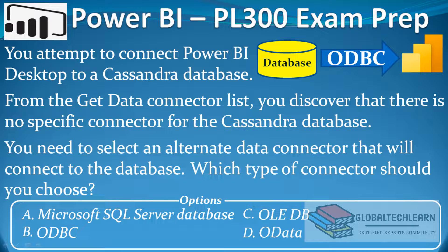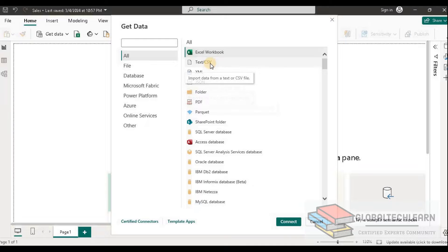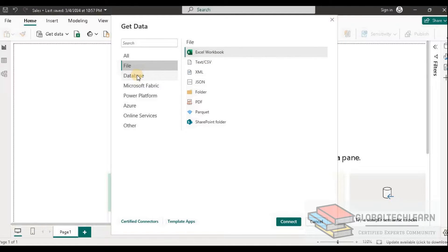Let's try to understand the question. We have a Cassandra database that we want to connect to, but this database is not available in the Power BI connection types. So let's understand what ODBC, OLEDB, and OData are, and what we need to do when a database is not available in Power BI. When connecting to any database, Power BI shows all available databases and source types.